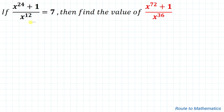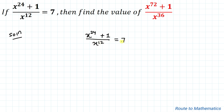We have been given an equation, and from that we are asked to find the value of the given expression. So without any delay, let's start the solution. The given equation is x to the power 24 plus 1 divided by x to the power 12 equals 7.